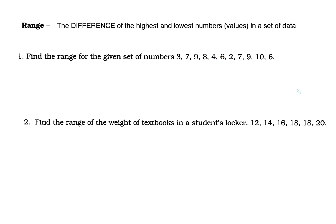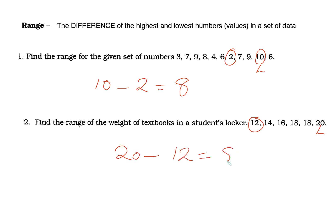The last thing is the range. To find the range, it's the difference of the highest and lowest numbers in your data set — that means subtraction. Looking at the first data set, the largest is 10 and the smallest is 2, so 10 minus 2 equals 8. That's our range. For the textbook weights, the largest is 20 minus the smallest 12, giving a range of 8.